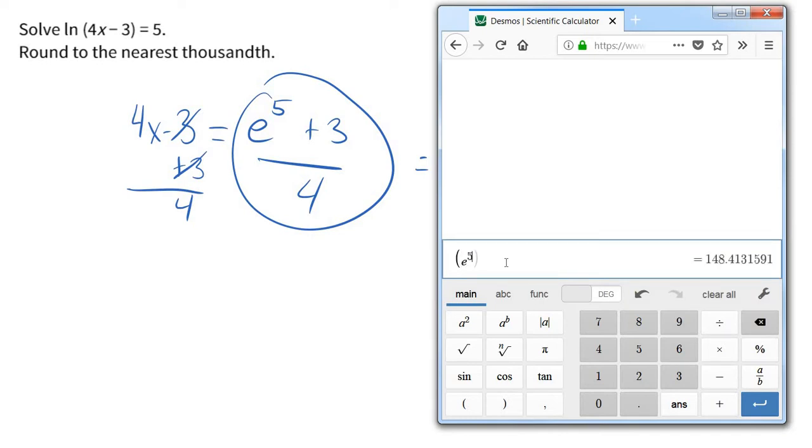So, e to the fifth, I'm just typing here on my computer keyboard, plus 3, close that off with a parenthesis, divided by 4. And they say nearest 10,000. So again, we're going to go 4 decimals. 37.8533, looks like, if we had to round up there.